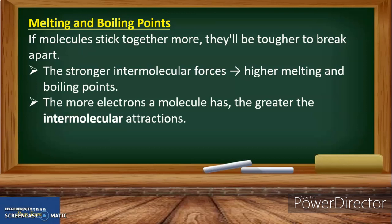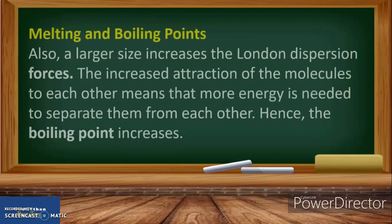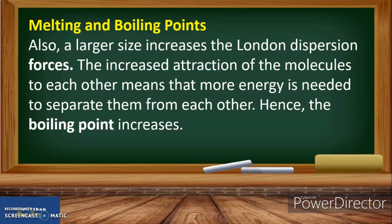If the liquid is thicker or viscous, the melting point and boiling point are both higher. If the liquid has a very low intermolecular force — like London forces or the dipole-dipole type — the melting point and boiling point are low. The more electrons a molecule has, the greater the intermolecular attractions. A larger molecular size also increases the London dispersion forces, meaning more energy is needed to separate the molecules from each other, and hence the boiling point increases.